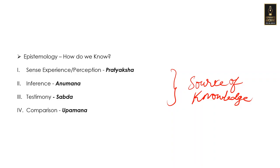In Indian philosophy, philosophical schools first talk about their epistemology — the sources on which their philosophy is built — before making any metaphysical statements about God or anything else. Having proved the validity of their sources, they go further making philosophical statements and prove those statements with already proven epistemological sources. For example, common epistemological sources include: first, sense experience or perception, called Pratyaksha in Sanskrit. If you only believe what you see or experience and make statements purely based on sense perception, then your source of knowledge is perception.